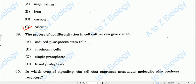Question number thirty-nine: The process of de-differentiation in cell culture can give rise to induced pluripotent stem cells. Option A will be the correct one.